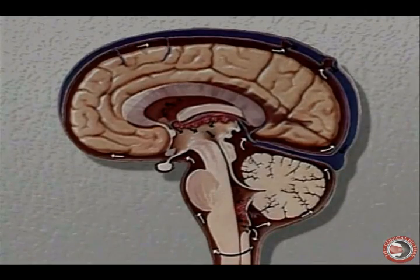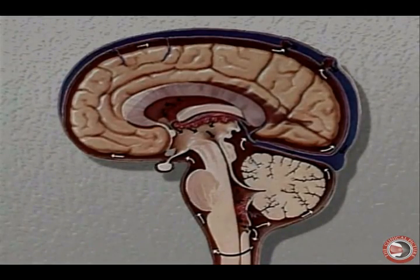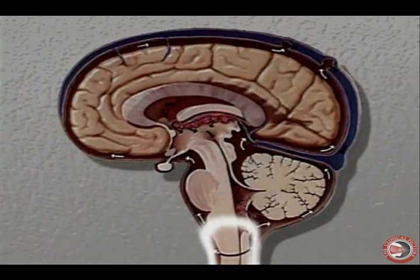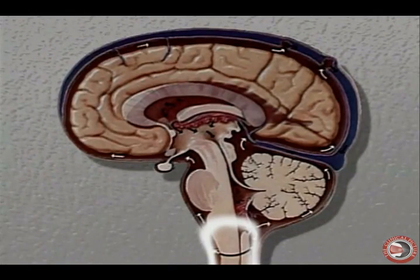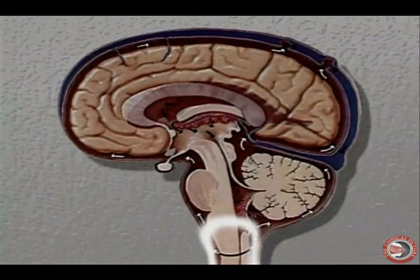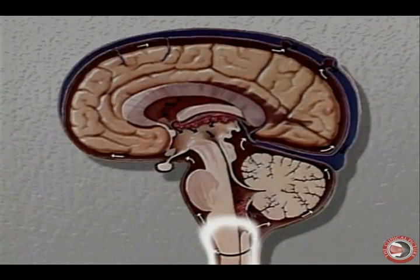The last major section in the evaluation for a central nervous system lesion is evaluating the spinal cord. Evaluation of the integrity of the spinal cord requires evaluating the descending spinal tracts or motor pathways and the ascending spinal tracts or sensory pathways.